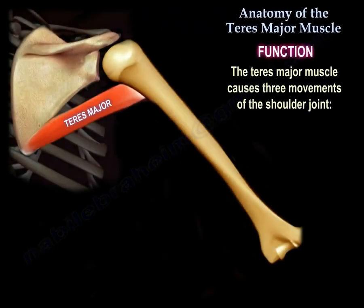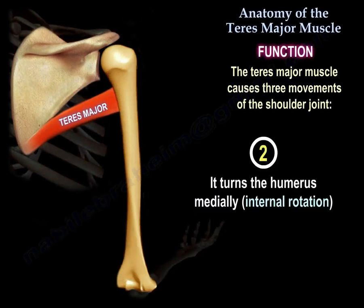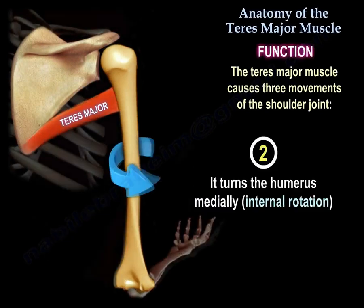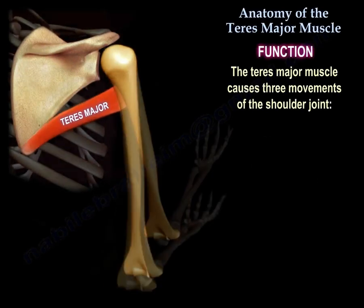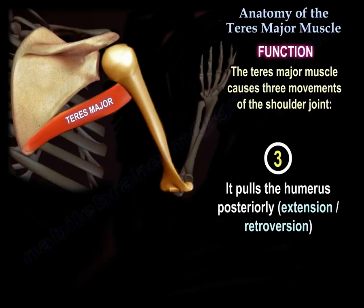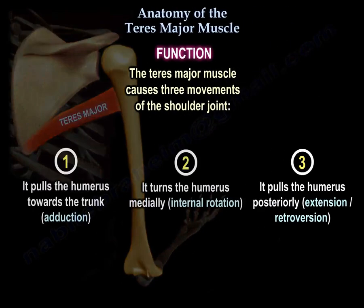Function: the teres major muscle causes three movements of the shoulder joint. It pulls the humerus towards the trunk — adduction. It turns the humerus medially — internal rotation. It pulls the humerus posteriorly — extension and retroversion. So its function is adduction, internal rotation, and extension of the shoulder.